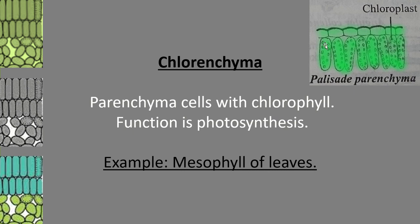In the picture you can find palisade parenchyma containing chloroplasts, and below it the loosely packed spongy parenchyma. The right-side picture indicates palisade parenchyma, while the left-side picture shows the spongy parenchyma beneath it.